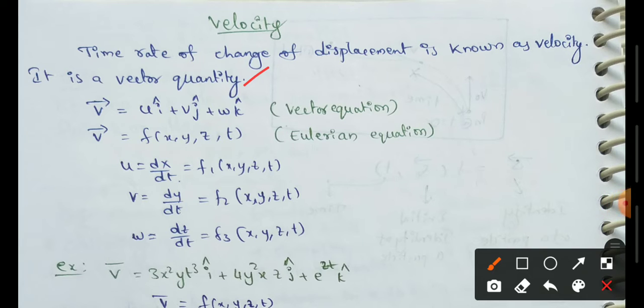The vector equation is: V = u î + v ĵ + w k̂.